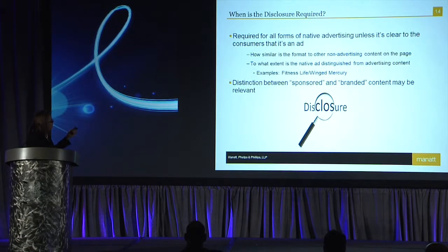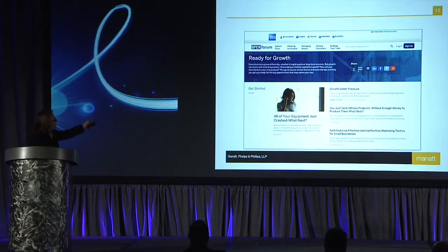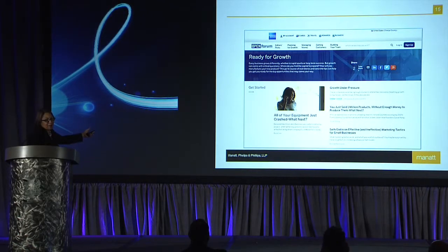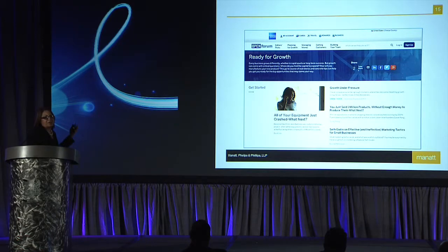This is one situation where the distinction between sponsored and branded content may be relevant. For example, here's one run by American Express for Open Forum. Their logo is all around it, they're clearly talking about certain features of their services, and even though it has the look of a native ad, there's enough branding that it sits on their site rather than a publisher's site — so consumers would likely know it's an ad.